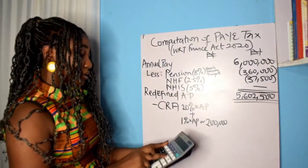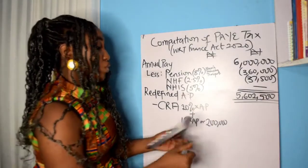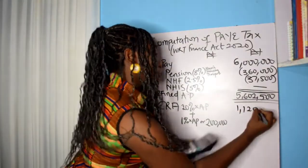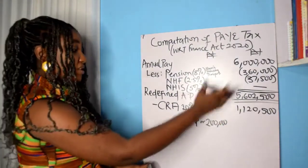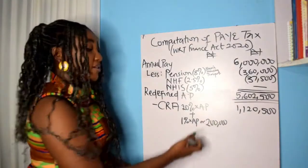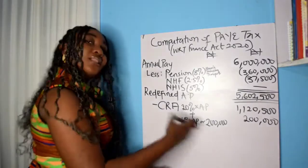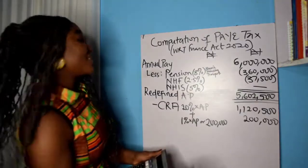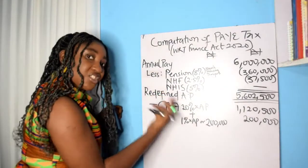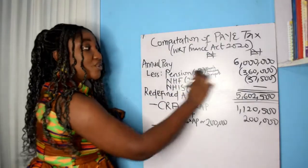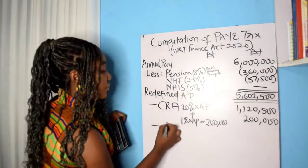So CRA = ₦1,120,500 + ₦200,000. The next category of allowances is the normal pension, NHF, and NHIS. The fact that you deducted them earlier does not mean you've permanently deducted them — you only deducted them to redefine the gross income. Now this is where your full relief is accounted for. So you have your pension contribution.